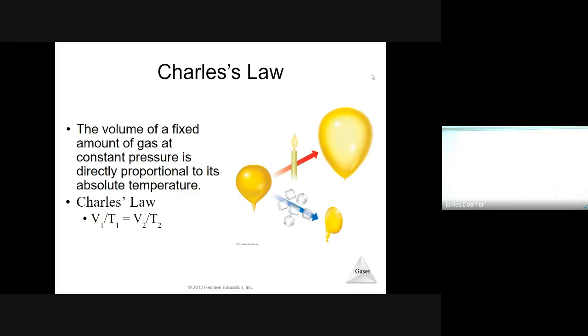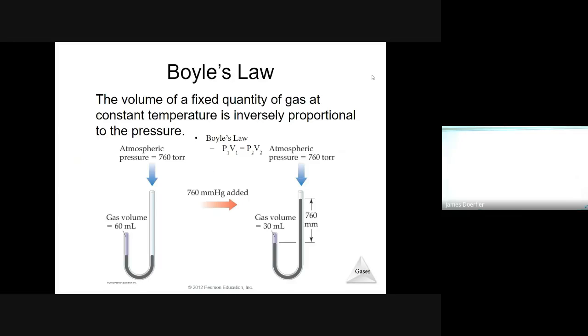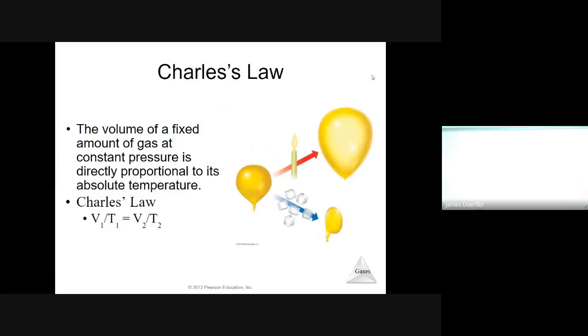Charles's law is the second one. It looks at constant pressure and how temperature and volume affect one another, mostly how temperature affects overall volume. So you get the formula of V1 over T1 equals V2 over T2. The variables denoted with the subscript one are the initial settings, and the ones with the subscript of two are the final, what happens after the change is made.